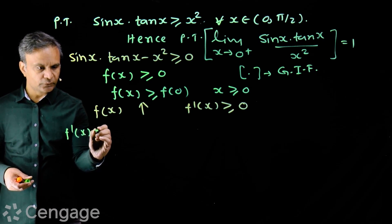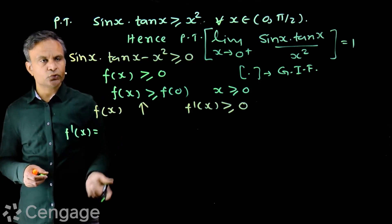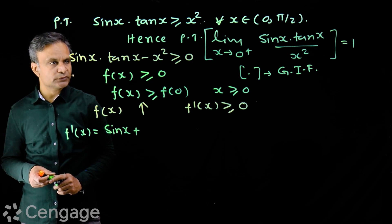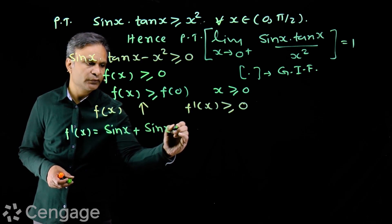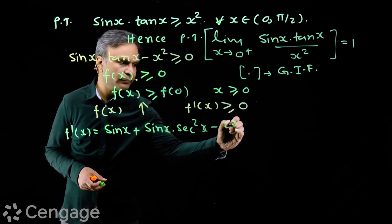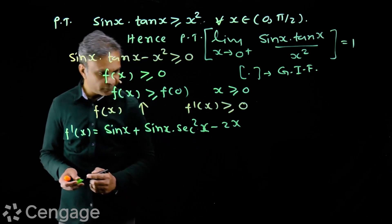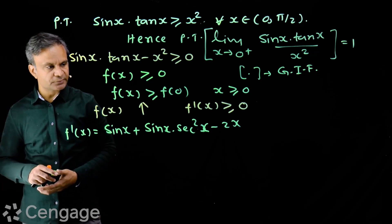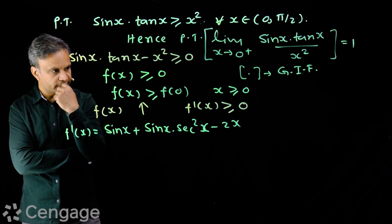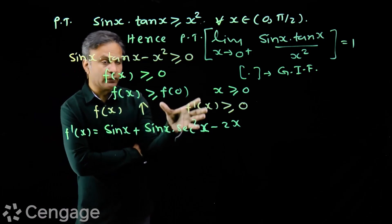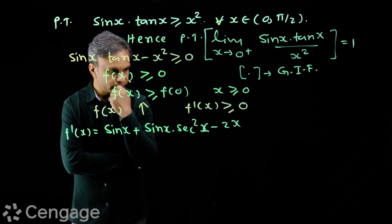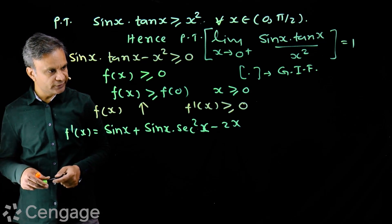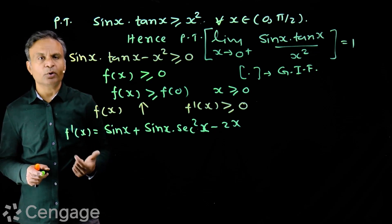Now we find the derivative. f'(x) = cos x · tan x + sin x · sec²x minus 2x. Now, what can we say about the sign of this expression? It seems difficult to determine whether this is greater than or equal to zero directly. No problem — we can take help of the second derivative.